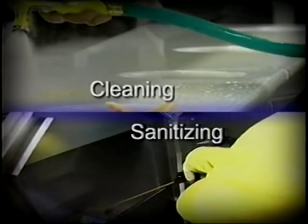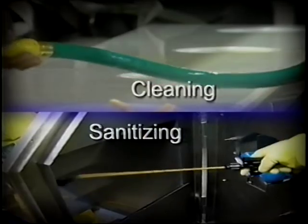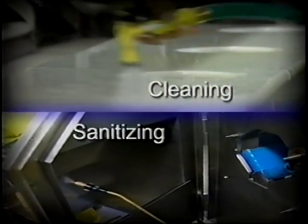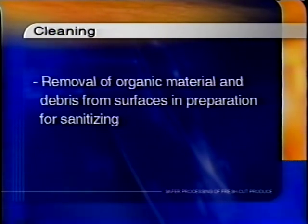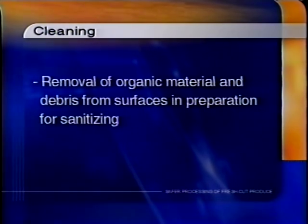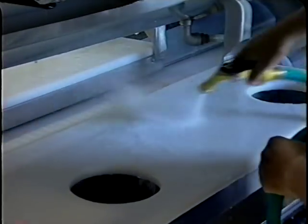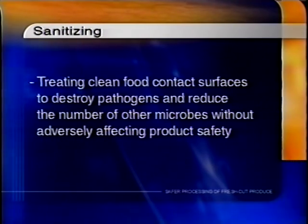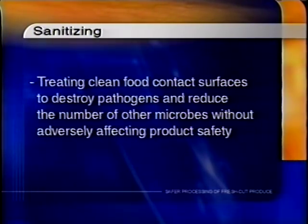What's the difference between cleaning and sanitizing? Even though many people believe they are the same, they are really two completely separate steps in an effective operation. Cleaning is the removal of organic material and debris from surfaces in preparation for sanitizing. It involves washing and rinsing, usually done with detergents and soap, and physical scrubbing or agitation, followed by a clean water rinse. Sanitizing means treating clean food contact surfaces by a process that destroys pathogens and reduces the number of other microbes without adversely affecting product safety.